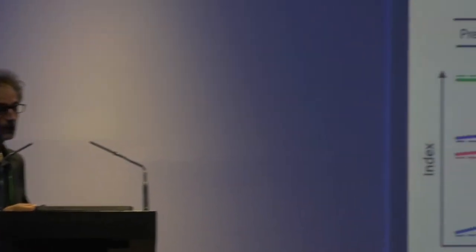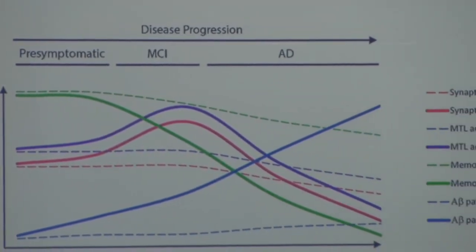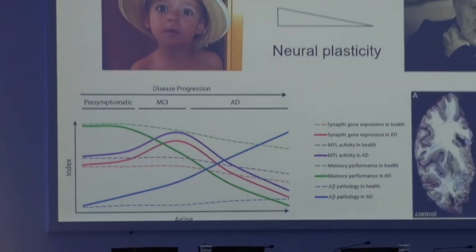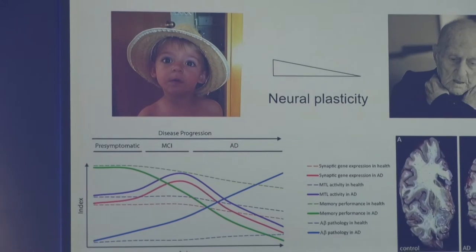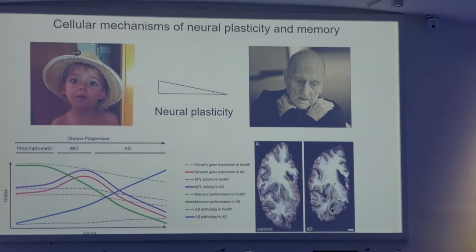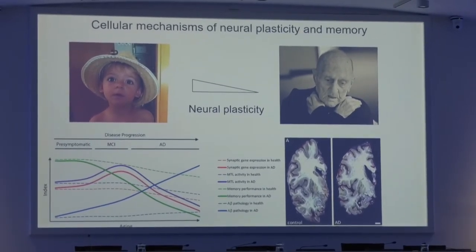Good afternoon everybody, thanks for being here. Our lab is interested in studying the cellular mechanisms underlying neuroplasticity and memory, because we think these mechanisms underlying neuronal plasticity are linked to the synapse loss and dysfunction that occurs in dementia disorders, and especially in Alzheimer's disease.